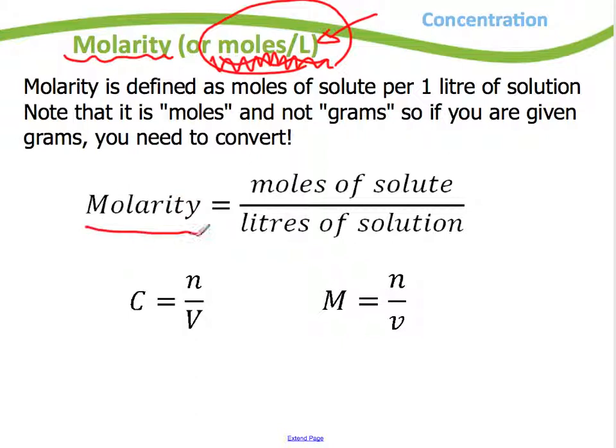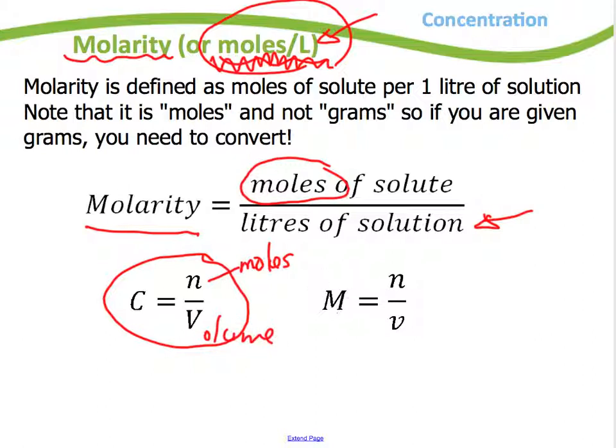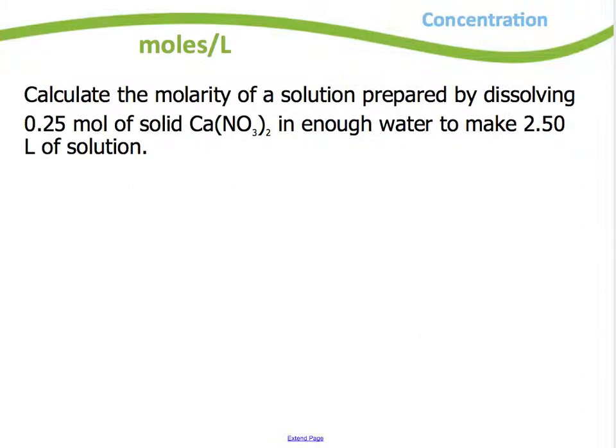So the molarity of a solution is equal to how many moles of solute I have divided by the total liters of solution. Often you might see a formula that looks like this. C standing for concentration is equal to N standing for moles and V standing for volume of the solution. Or you might see it like this. Molarity is equal to moles over volume. Here's a couple of questions we can look at.